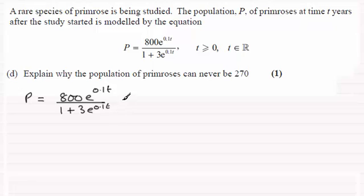So what we need to do is change the look of this. If we were to divide both top and bottom by e to the power 0.1t, what we create is an easier equation to work with. We get 800 on the top, and this would be divided by 1 divided by e to the power 0.1t, and then for this term, we'd just be left with 3.